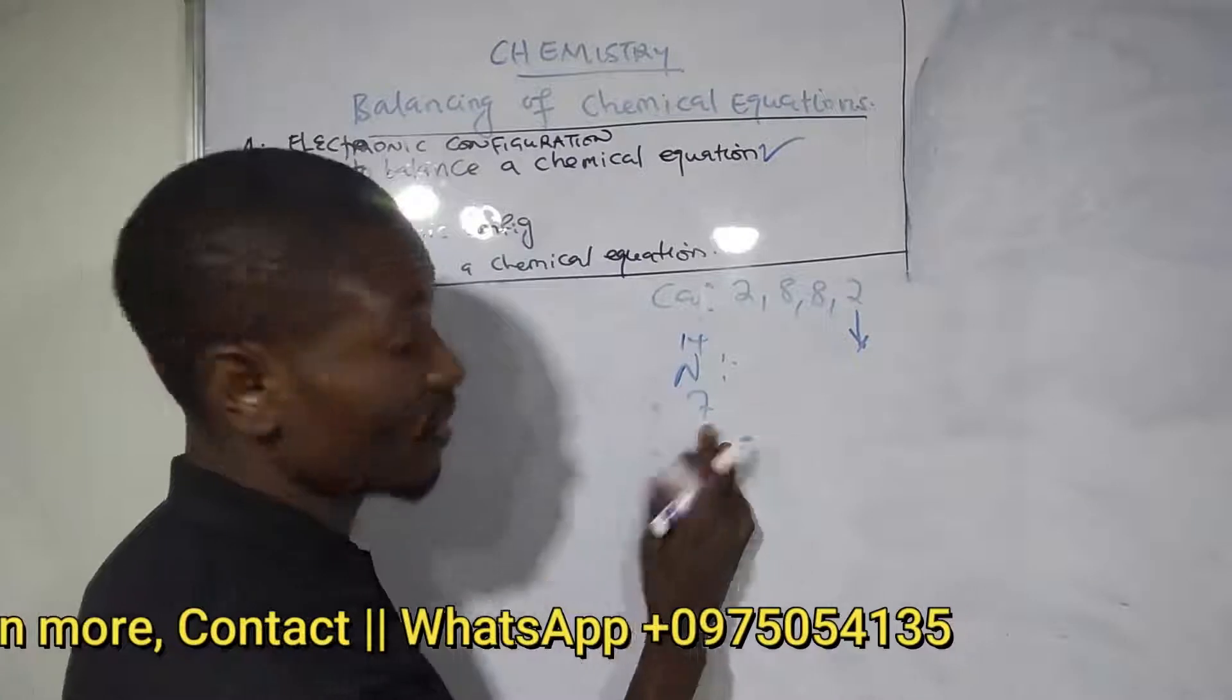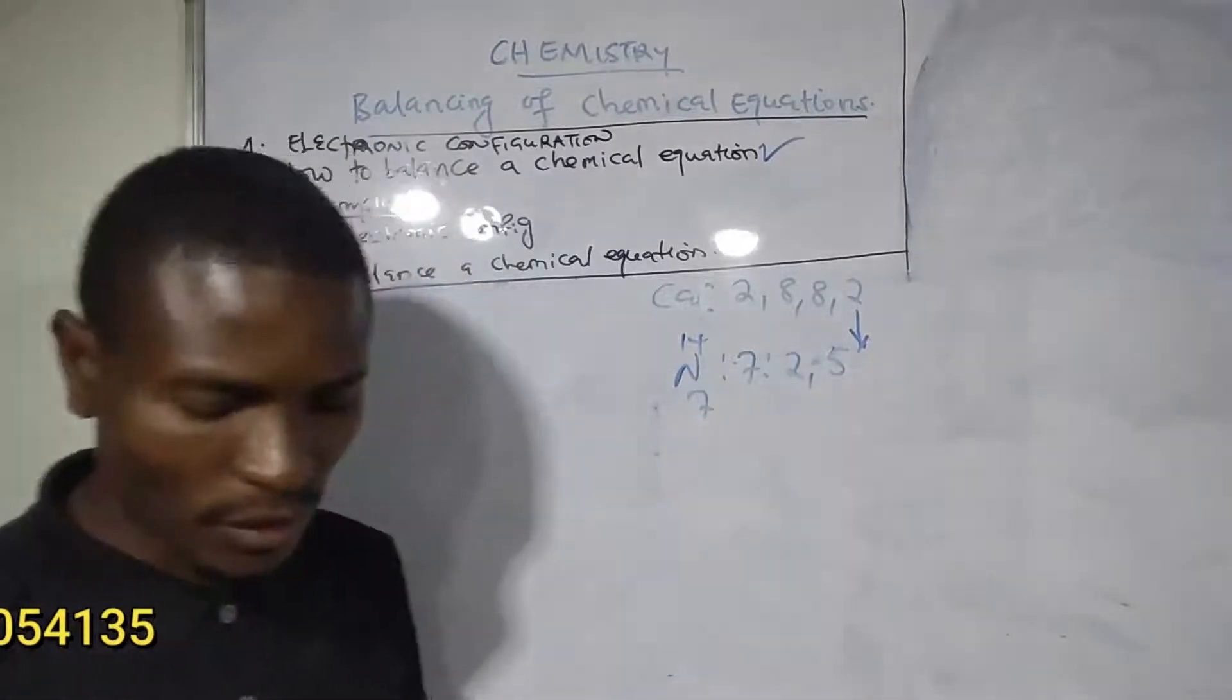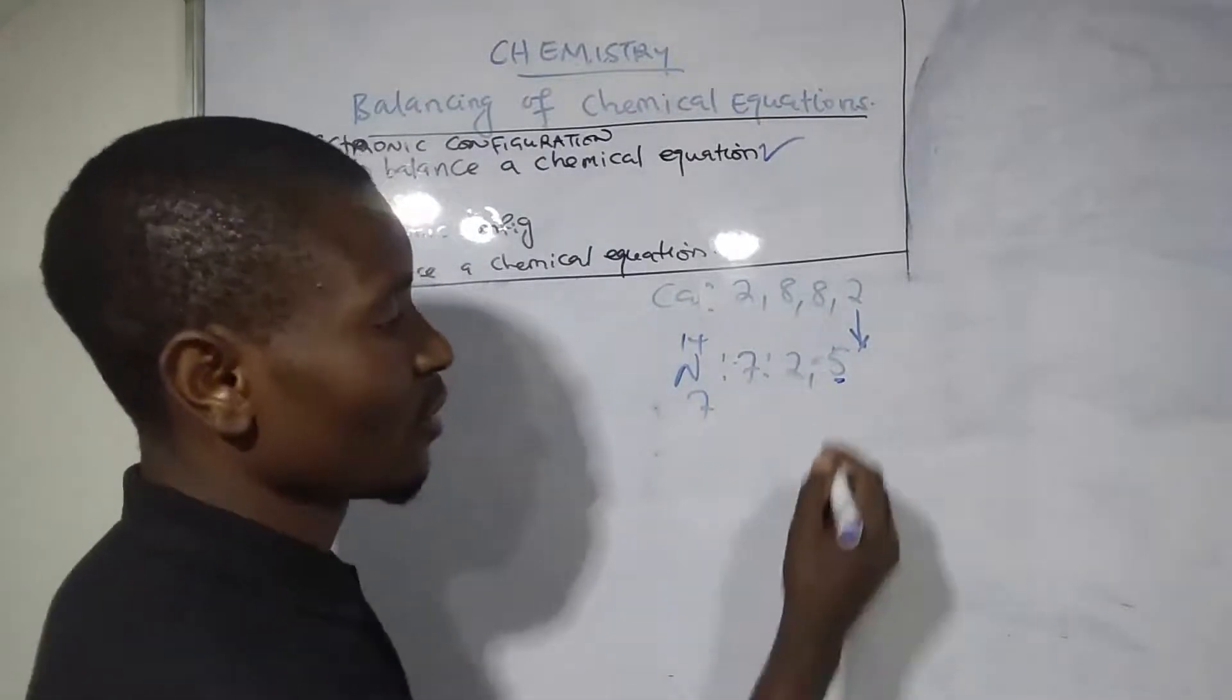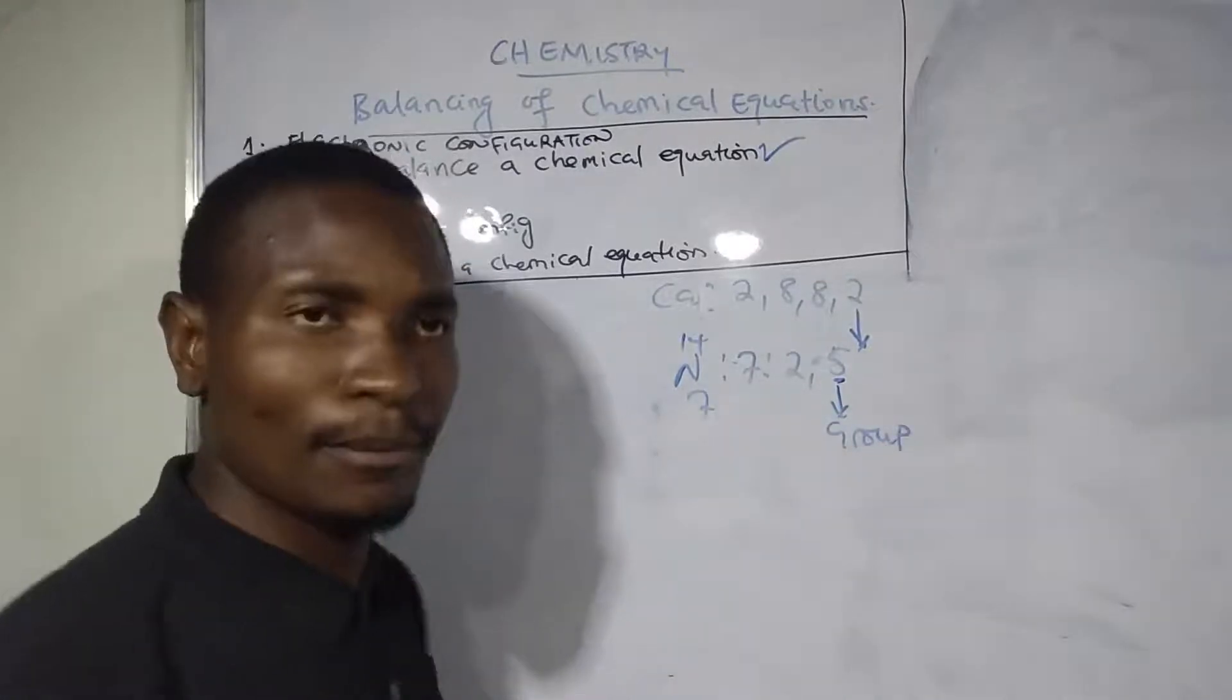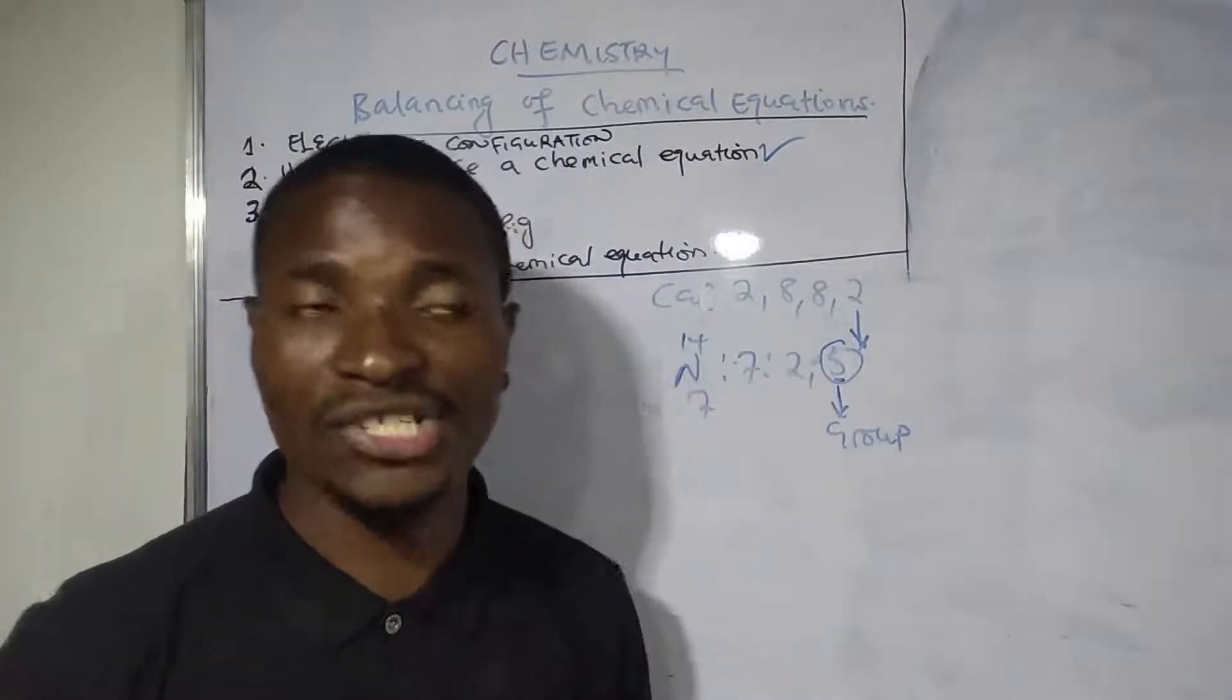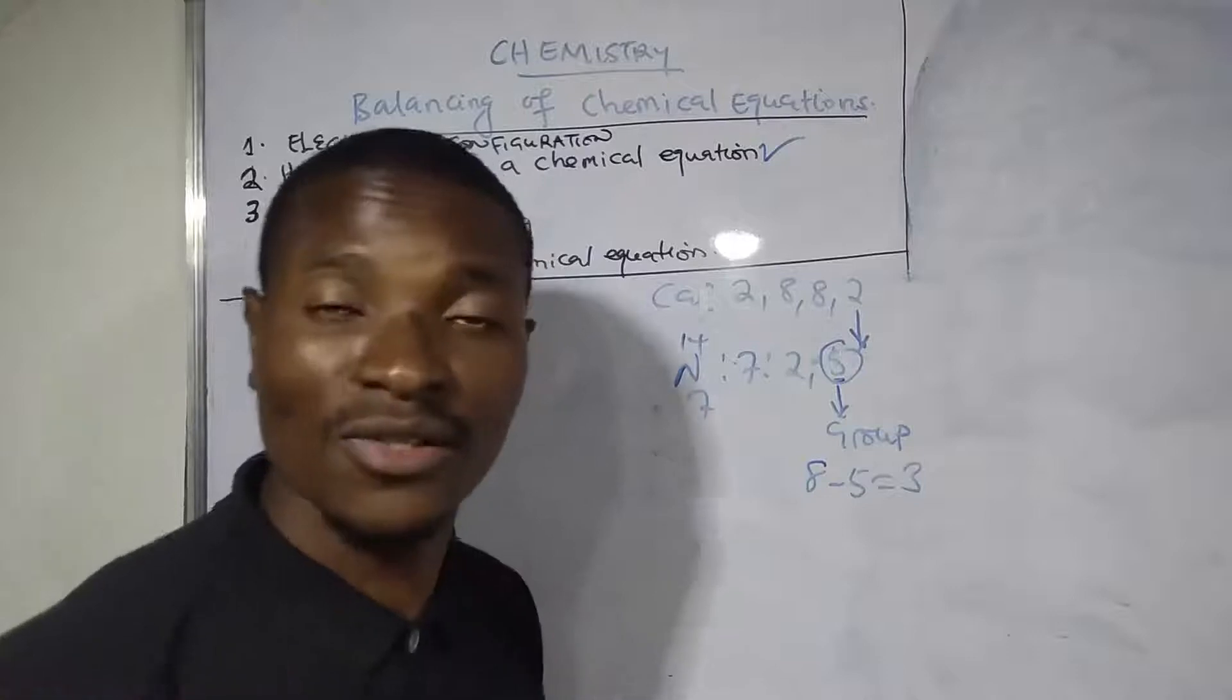When you configure nitrogen with 7 electrons, you get 2, 5. There is an exception for nitrogen. The last number, which is 5 in the last shell, gives you the group number. But the valence is not actually 5. The valence must be 8 minus 5 to find the valence of nitrogen.